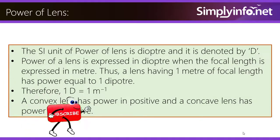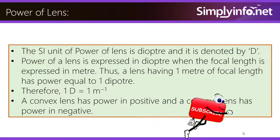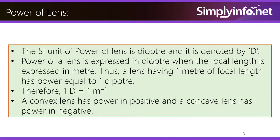The SI unit of power of lens is dioptre and is denoted by D. The power of a lens is expressed in dioptre when the focal length is expressed in metres. A lens having 1 metre of focal length has power equal to 1 dioptre. Therefore 1 D is equal to 1 m to the power of minus 1. A convex lens has power in positive and a concave lens has power in negative.